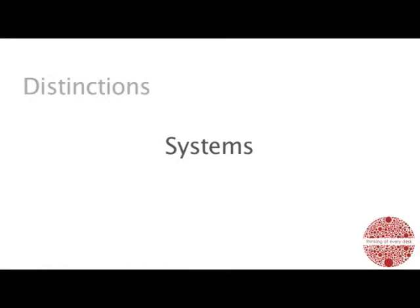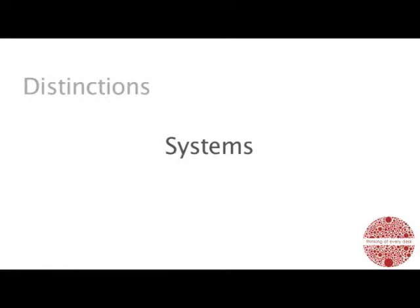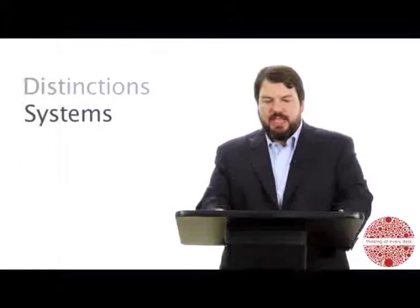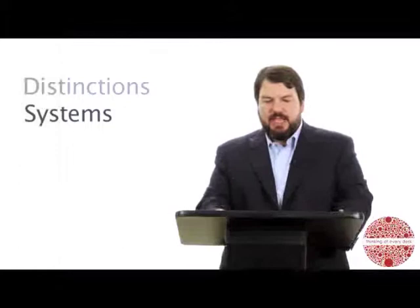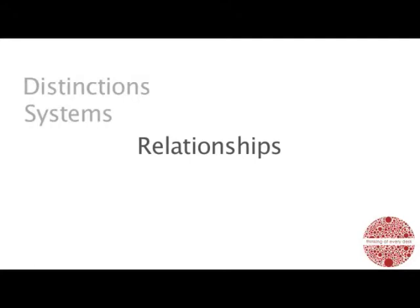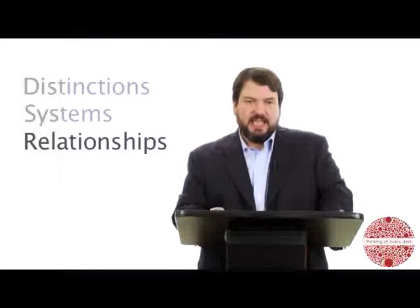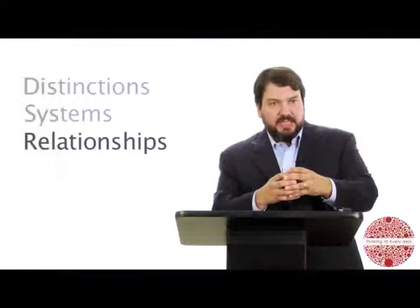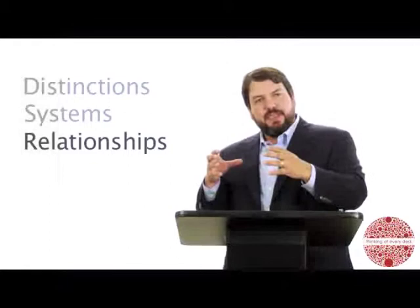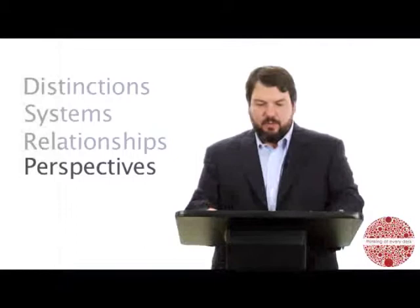Systems — once we distinguish things, we put them together into systems of part-whole relationships. A chair is made up of the arm and the back and so on. We take things and organize them into part-whole groupings. We also relate those things — we take one thing and another and relate them together, and oftentimes when we relate them, they turn into little systems themselves. We do all of this — distinguishing, relating, grouping through part-whole combinations and systems — from various perspectives. We're always taking a perspective at any given point in time. So D, S, R, and P are universal to this process.